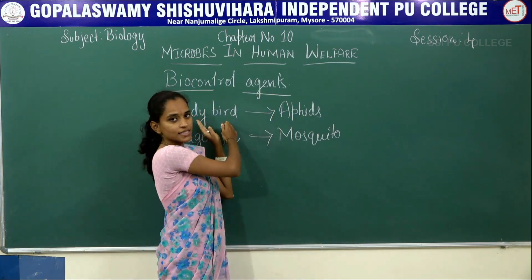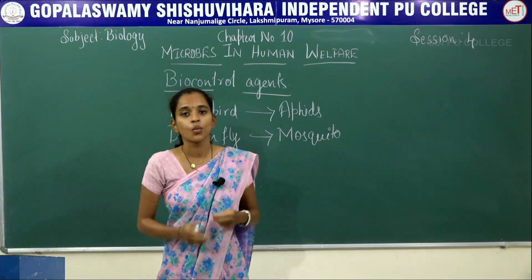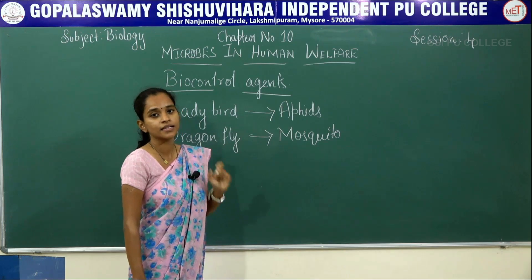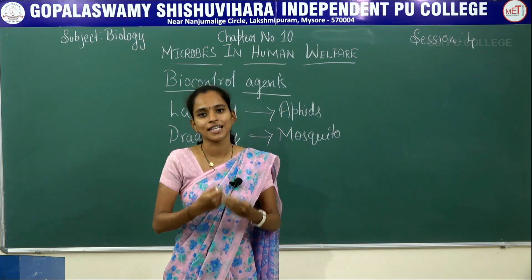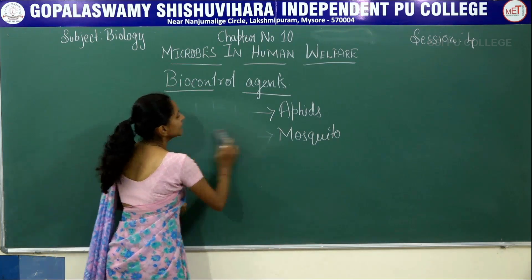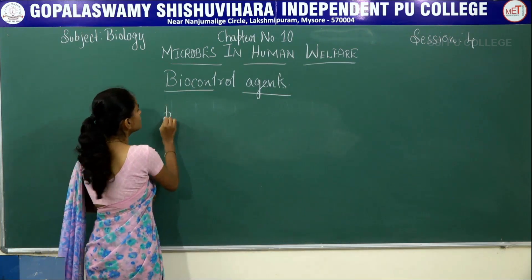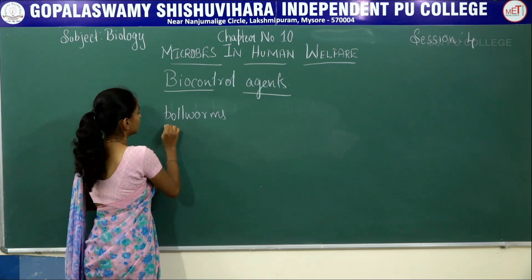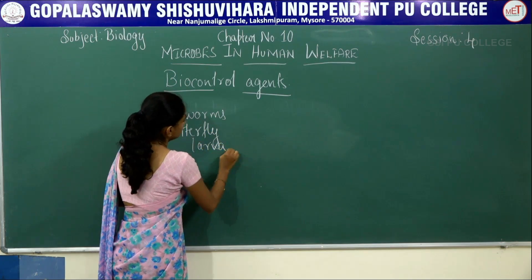The problem with natural predators is they consume only certain categories of pests, while the rest of the pests are not touched by them. That is why the biotechnological method is now used to produce plants which have inherited the character of resisting pests as well as diseases. For example, pests which destroy cotton include bollworms and butterfly larvae.